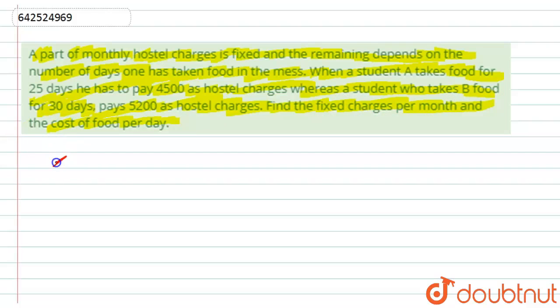So let's start with this solution. First of all, what is given to us? We have a hostel and there are two students, A and B, who are taking food from the hostel and paying charges. What we have to find here is the fixed charges per month and the cost per food.